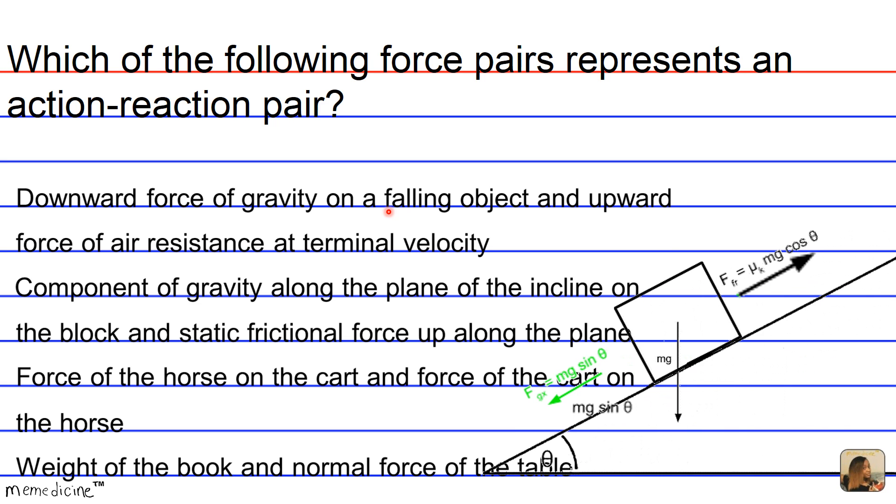The gravity along the plane of an incline and the static frictional force, this mu sub K should be an S for static because the block is not in motion, are equal. But they are not the same type of force. This friction is a type of contact force and gravity is a field force. And they act on the same object, the block. So they're disqualified as well. Answer choice B is incorrect.